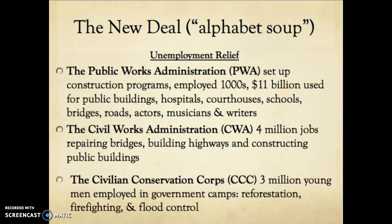The third issue Roosevelt had to deal with was unemployment relief. With about 13 million people unemployed, some form of work was needed. The PWA — Public Works Administration — set up construction programs and employed thousands of people. Eleven billion dollars were used for public buildings, hospitals, courthouses, schools, bridges, and roads, and also employed actors, musicians, and writers. The CWA — Civil Works Administration — provided 4 million jobs to people repairing bridges, building highways, and constructing public buildings.